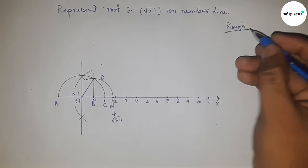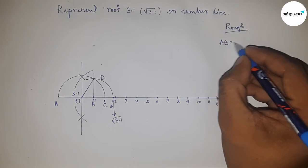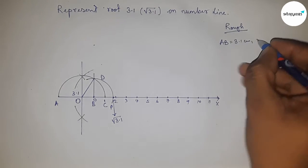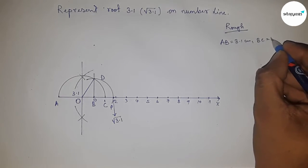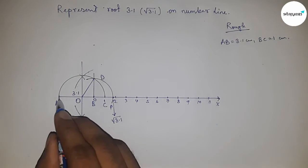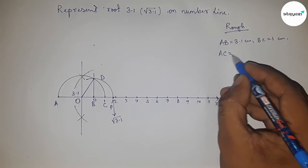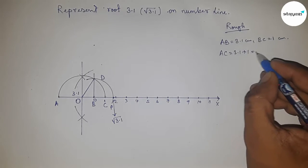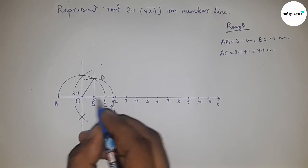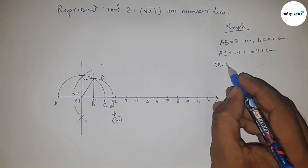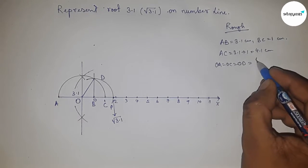Given AB equals 3.1 centimeters and BC equals 1 centimeter, so AC equals 3.1 plus 1, which is 4.1 centimeters. Now the radius OA, OC, and OD equal 4.1 by 2 centimeters.